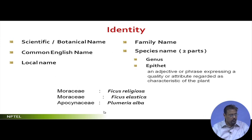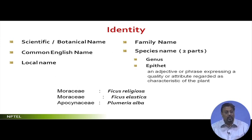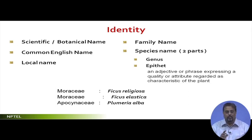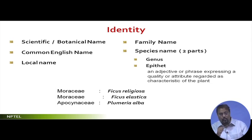Let me give one more example. Apocynaceae is the family name of a tree called Plumeria alba. Plumeria is a tree known as the pagoda tree. Plumeria has multiple varieties — one is Plumeria alba and another is Plumeria rubra. Plumeria is common to both; the difference lies in alba and rubra. These are two different trees that look alike but have distinguishable differences.